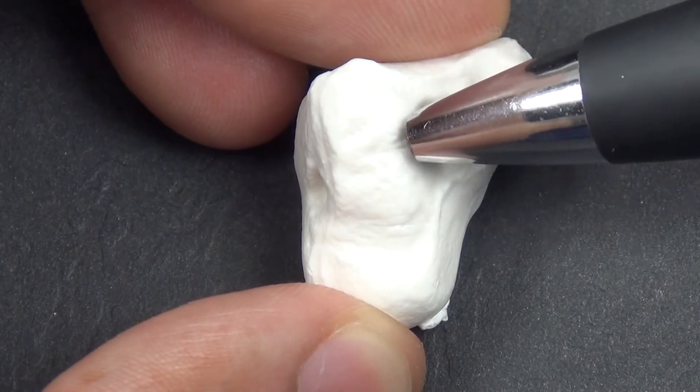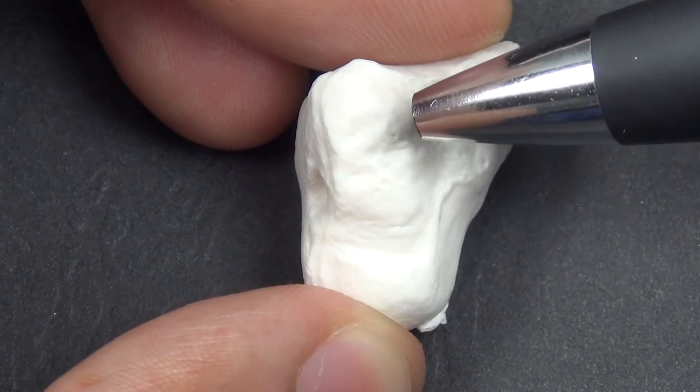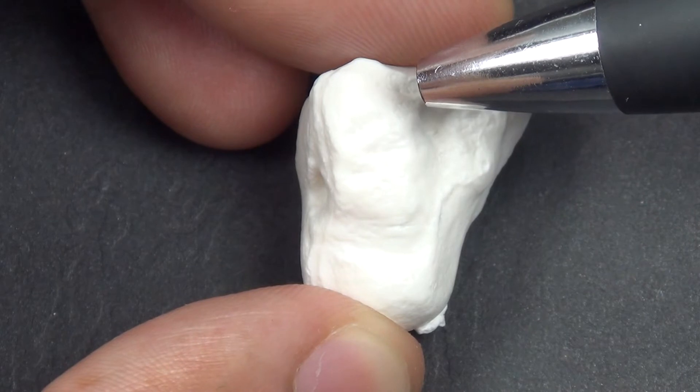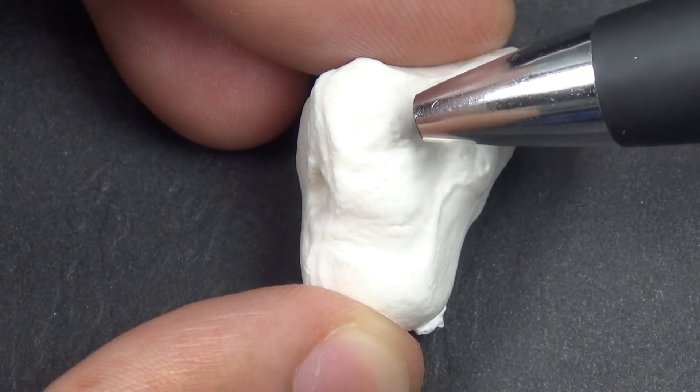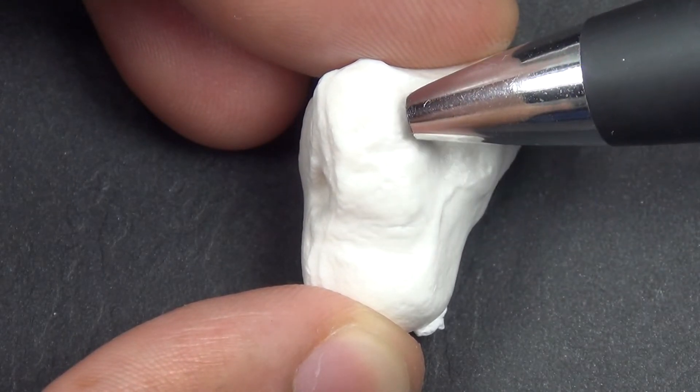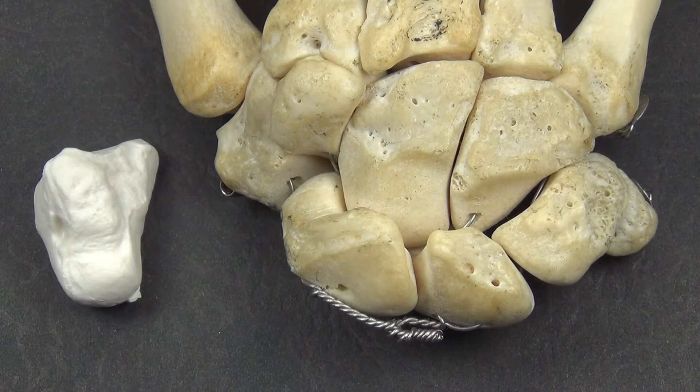The palmar surface is slightly convex. It is rough for the attachment of ligaments, and it also provides origin for some fibers of the oblique head of the adductor pollicis.